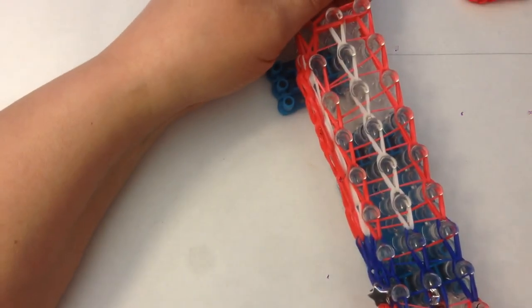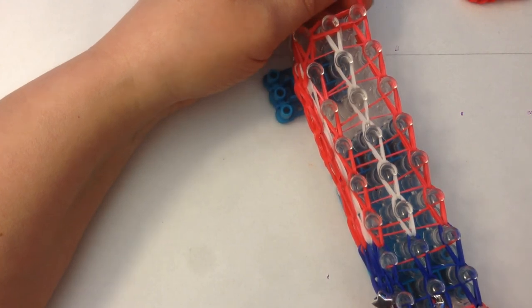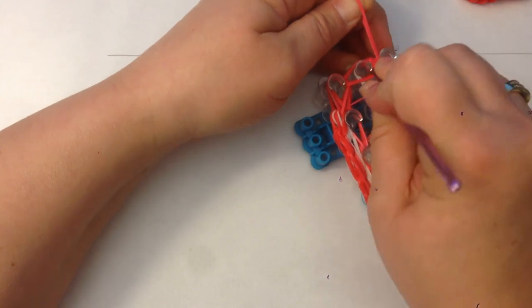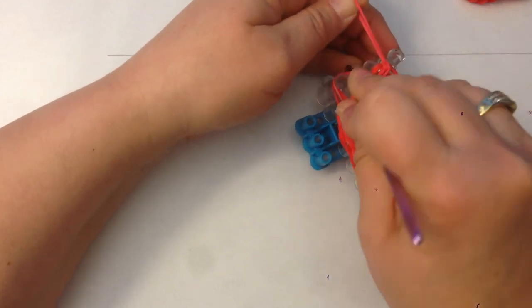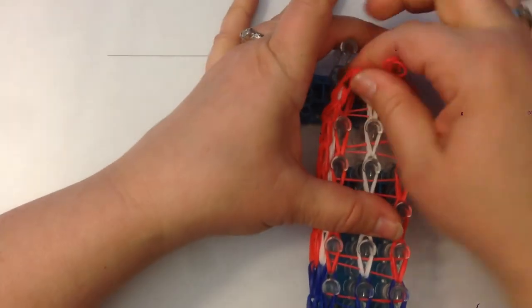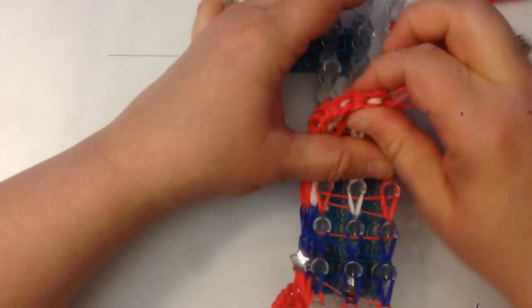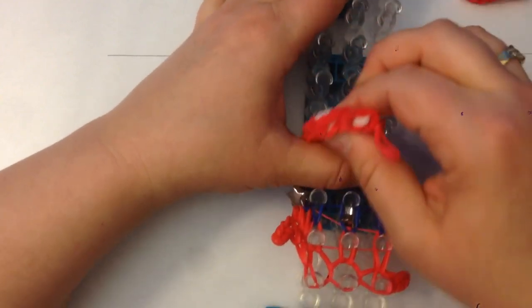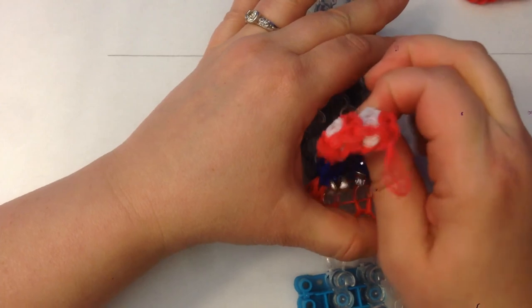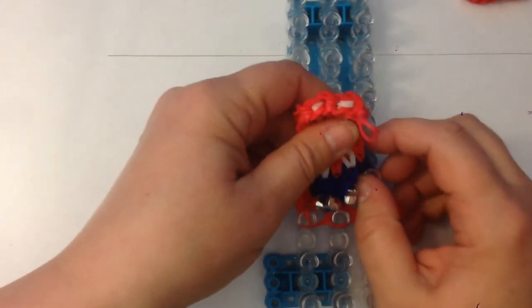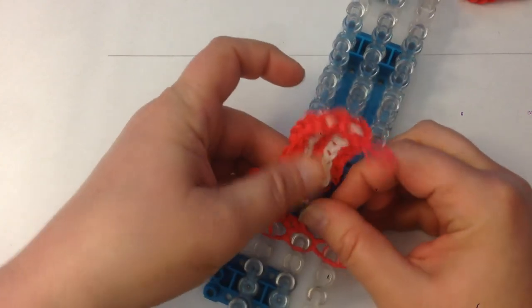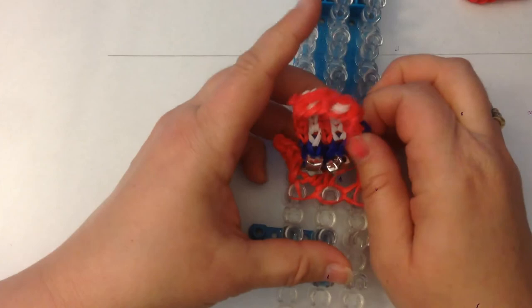Now we're ready to take this off our loom. I use the back of the hook to help me. I just find it easier. Ease these off and then just gently pull your design off the loom, keeping your little beads the right way.